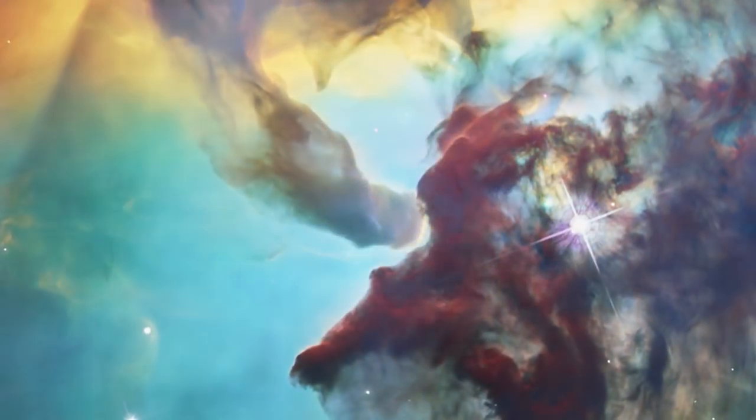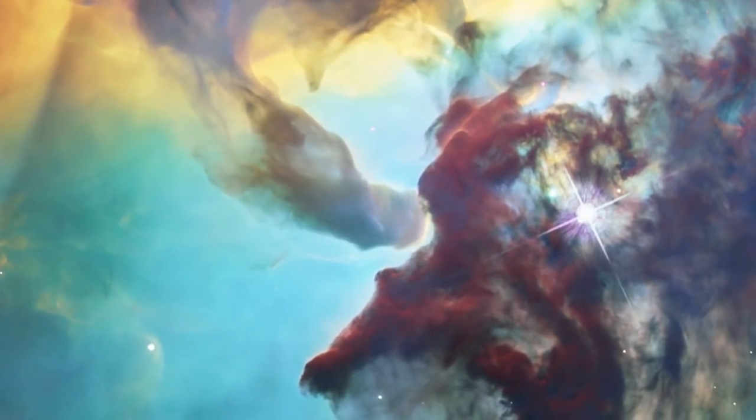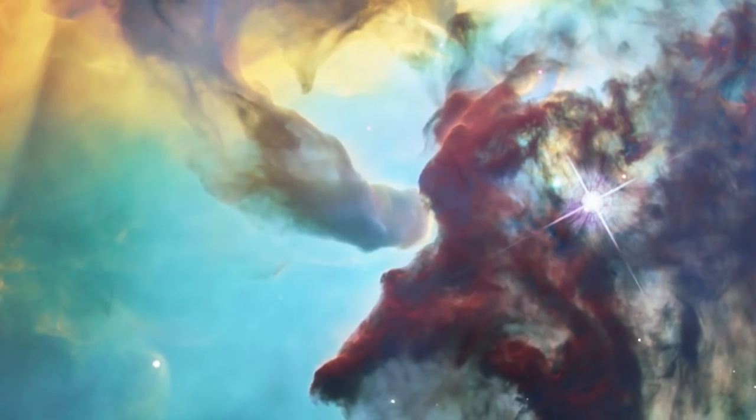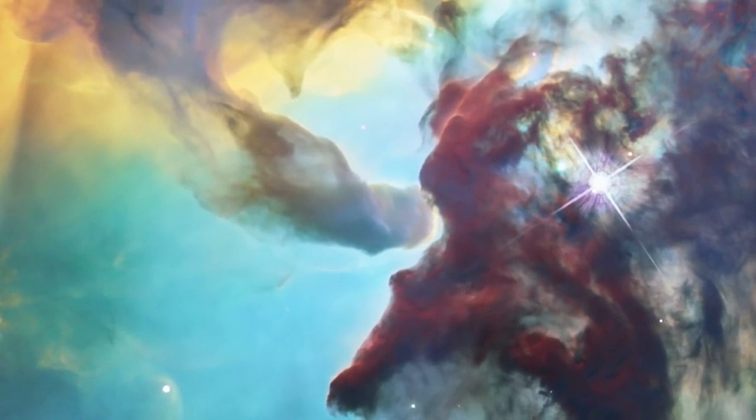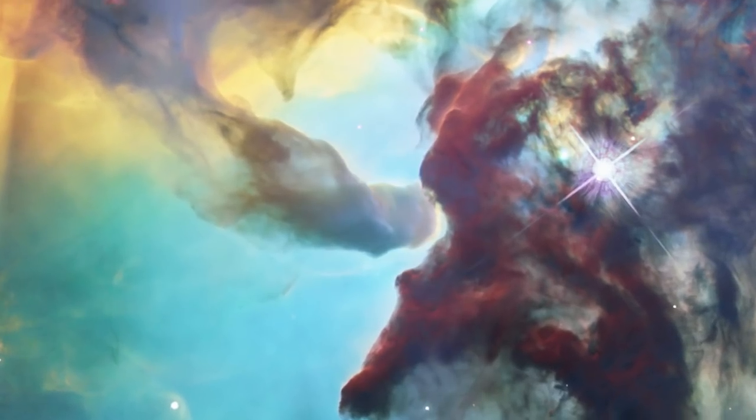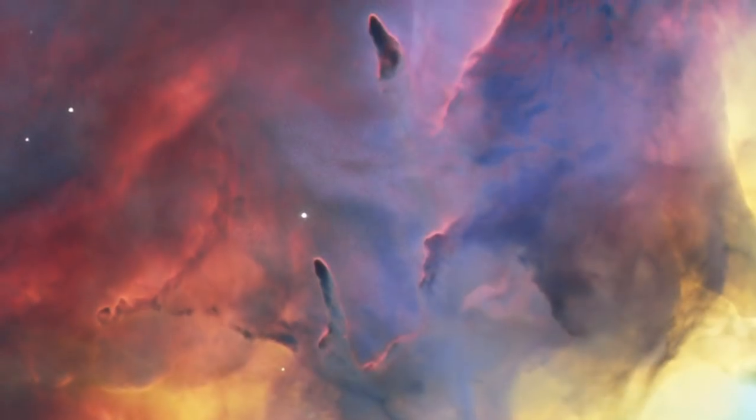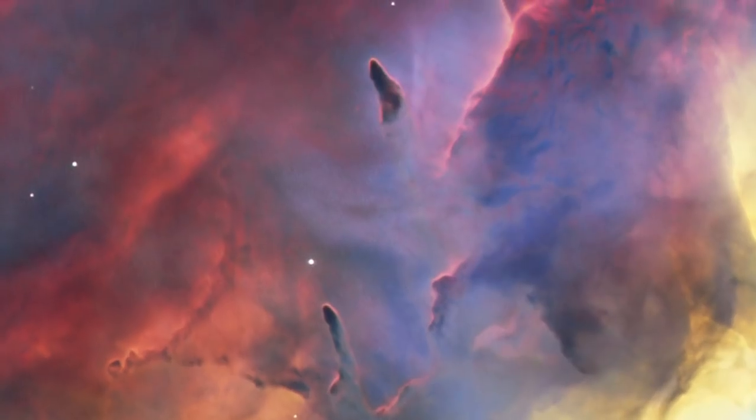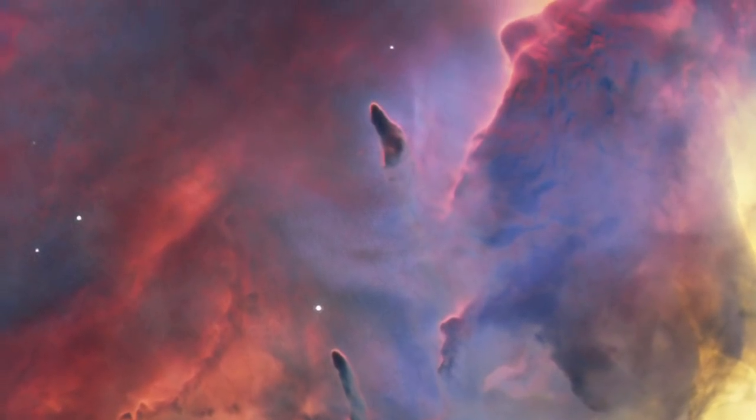The nebula features interstellar twisters, eerie rope-like structures made of dust and gas. In other places, patches of extremely dense dust block the light of background stars.